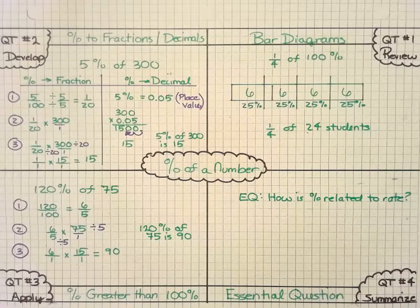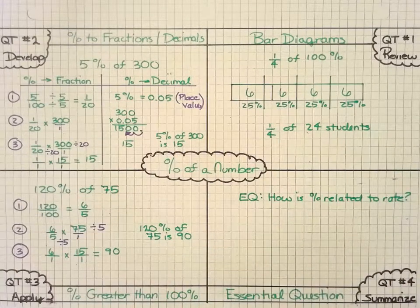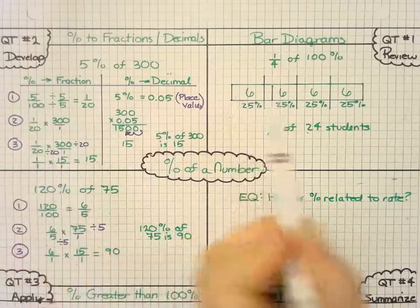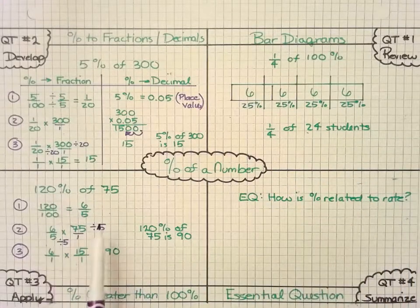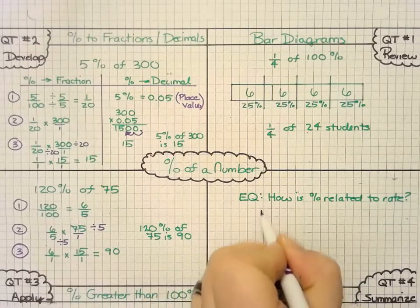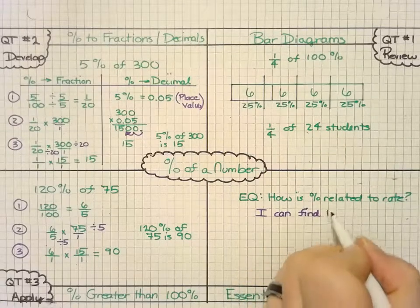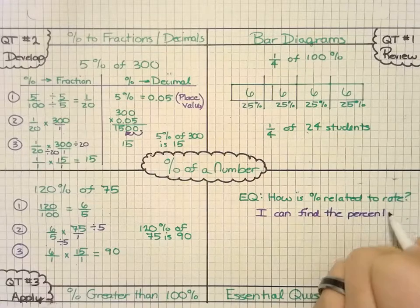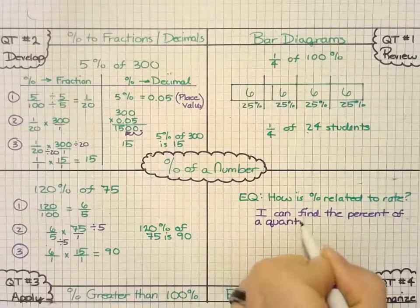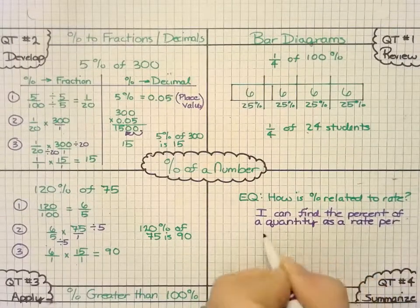So to summarize, how is percentage related to rate? Based on this information, I can see that I can use the percentage of a quantity as a rate per 100. We saw it here. We saw it in our bar diagram. We saw it that we could take our larger percentage and put it over 100, and there's our rate. And so therefore, I can find the percent of a quantity as a rate per 100.